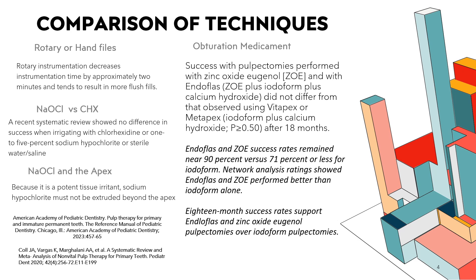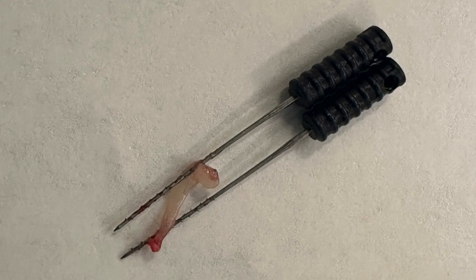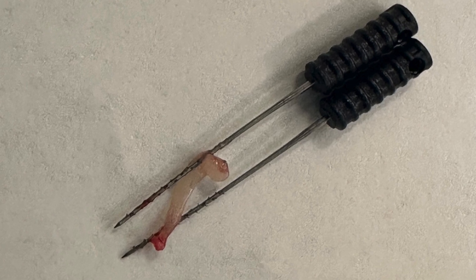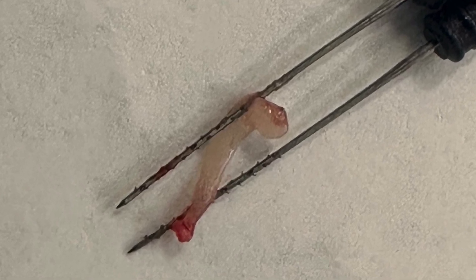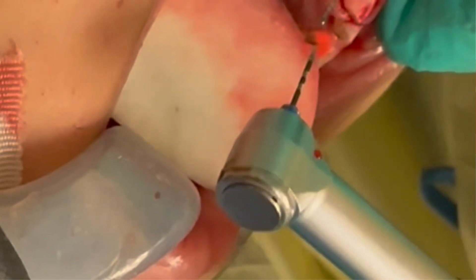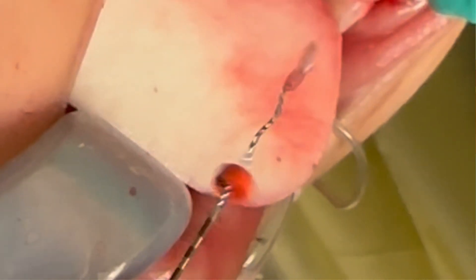Let's take a look at comparison of techniques. This is from the American Academy of Pediatric Dentistry Pulp Therapy for Primary and Immature Permanent Teeth, and also from a Cole study on a systematic review and meta-analysis of non-vital pulp therapy for primary teeth. When assessing rotary versus hand files, rotary instrumentation only decreases the actual instrumentation time by approximately two minutes and tends to result in more flush fills with your interpulpal medicament. This is an example of using two bar brooches to remove the pulp out of an anterior tooth. If hand filing, I'll typically only hand file up to an O2-35K flex. This is removal of the pulp with a rotary instrument on a primary anterior tooth with minimal cleaning and shaping required.